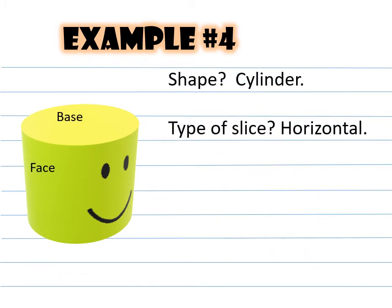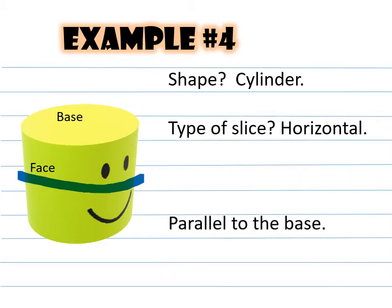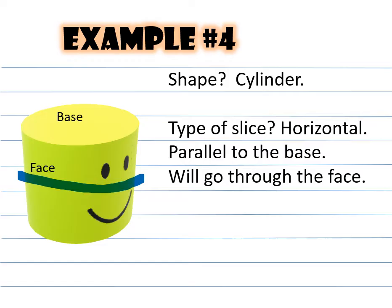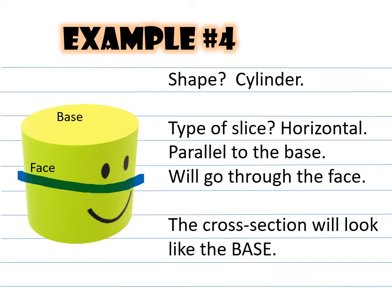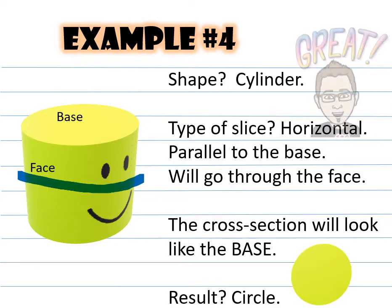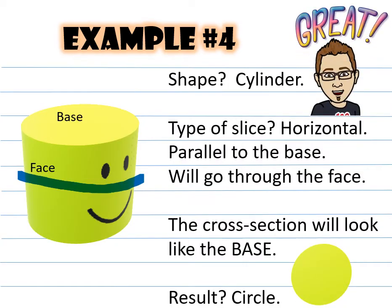Example number four: again a cylinder. This cut is going to be horizontal — it's parallel to the base, which will go through the face. The cross section will look like the base. The result is going to be a circle.